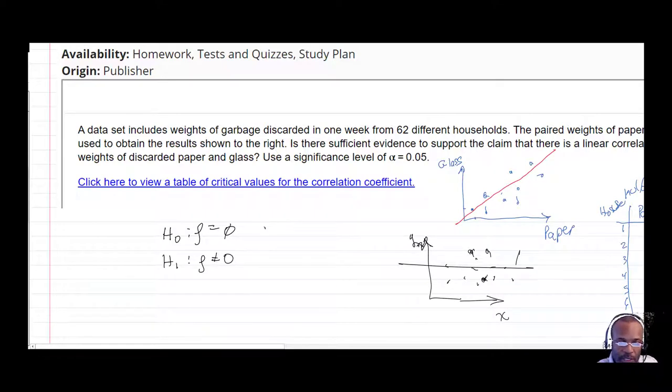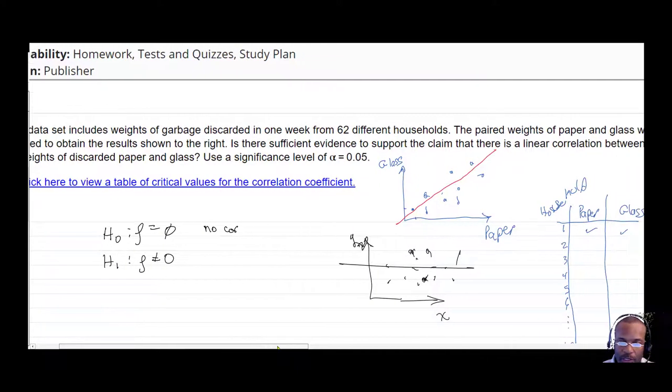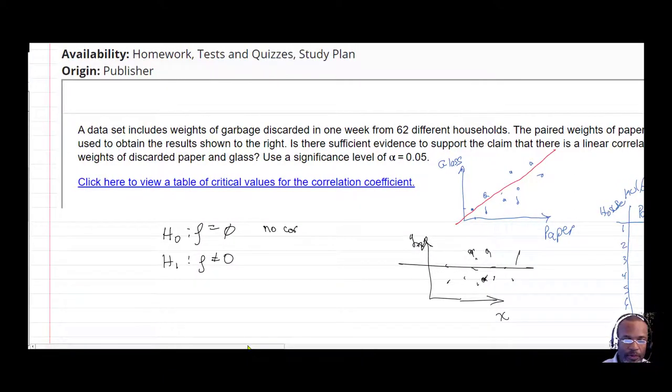So this one says, if rho equals zero, there's no correlation between household weights of paper versus weights of glass. So no correlation between those two weights. That's our hypothesis. And the alternative is that there is correlation.